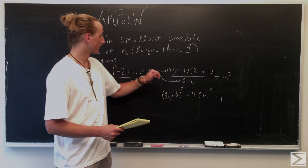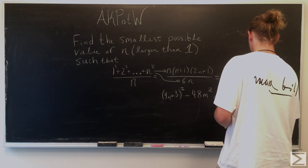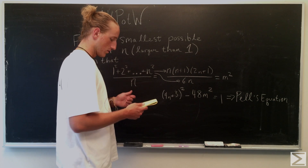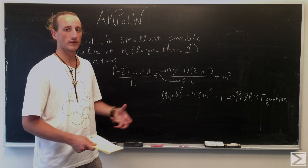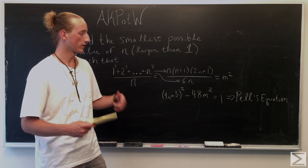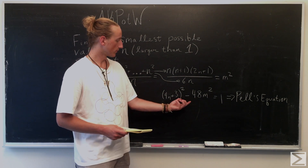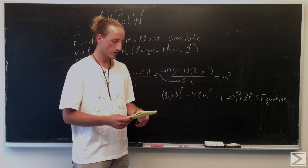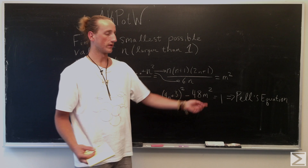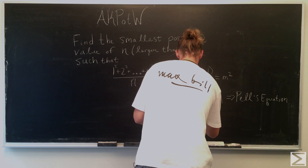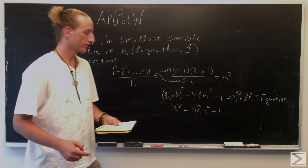We're going to use Pell's Equation to try to find a solution to the original problem. Using a simplified version of Pell's Equation, we can just call this x squared and this y squared. So with this equation, we're looking for solutions to that as well.